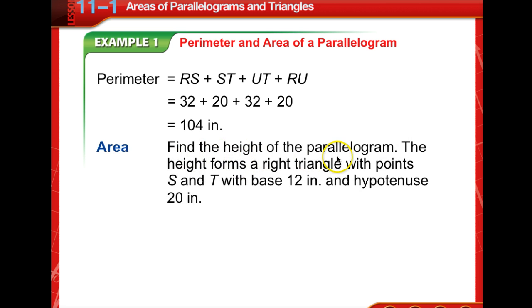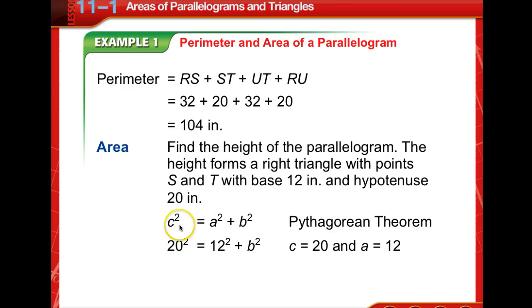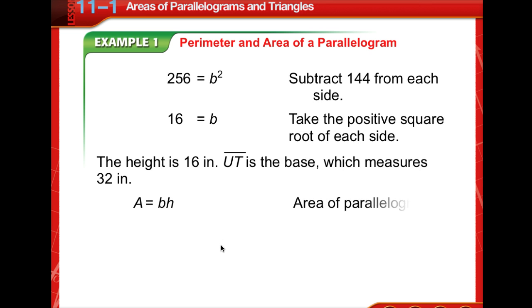Find the height of the parallelogram. Well, the height forms a right triangle with points S and T. The base is 12. The hypotenuse is 20. So we're going to use the Pythagorean theorem and substitute in. Where the hypotenuse is 20, one of the sides is 12. Now let's solve for the second side. Since length has to be positive, we're only going to use the positive solution to this one, which is 16. So the height is 16 inches.